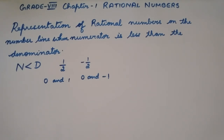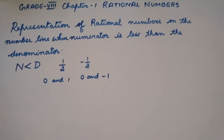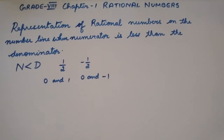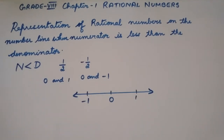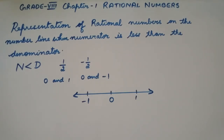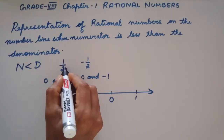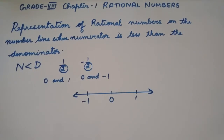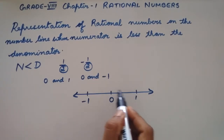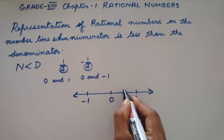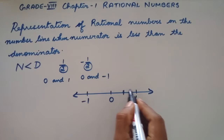So now let us draw the number line with only 0 and 1. Why only 0 and 1? Because the number 1 by 2 lies somewhere between 0 and 1. Now we divide the length between 0 and 1 into equal parts. The denominator tells us the number of equal parts. The denominator is 2, so we divide it into 2 equal parts.